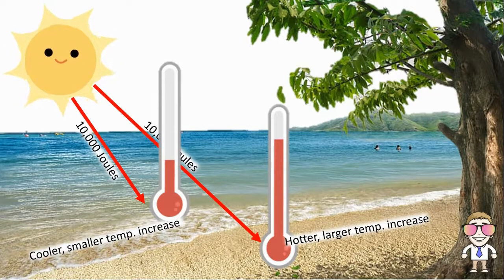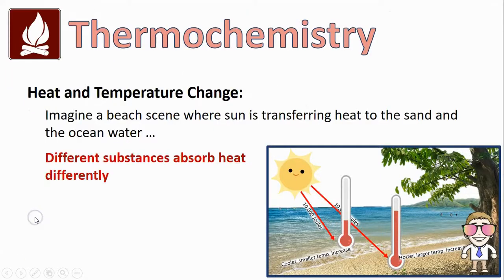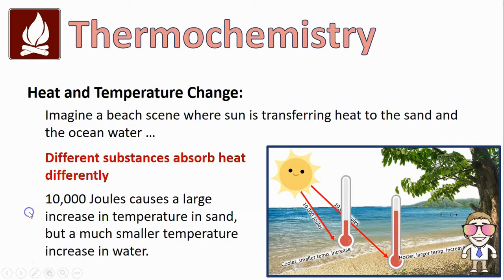And we know this from experience — anytime you've walked on sand compared to walking in water, the sand is much, much hotter. So what you're seeing here is that different substances absorb heat differently. The sand and the water both got 10,000 joules, but that 10,000 joules had a very different effect. It caused a large increase in the temperature of the sand, but a much smaller temperature increase in the water.